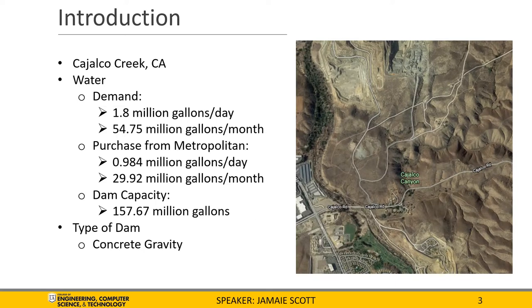The dam we designed will be located in Cahalco Creek, between the eastern border of the City of Corona and Lake Matthews. The water demand of the client is 1.8 million gallons per day or 54.75 million gallons per month. The methodology used to calculate the capacity of the dam and the necessary amount of additional water purchased from Metropolitan is the ripple method, which accounts for weather patterns and maximizes the amount that can be gained naturally. 29.92 million gallons will be purchased each month, just over half the needed amount, meaning our dam is providing for almost half of the needs with a capacity of 158 million gallons.